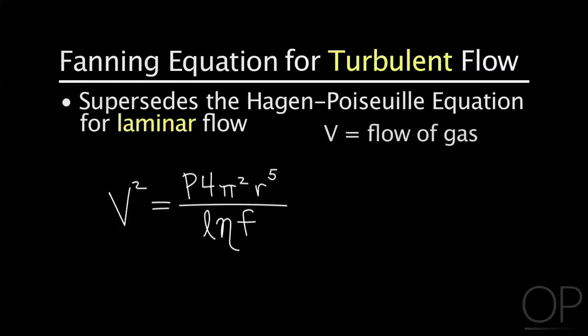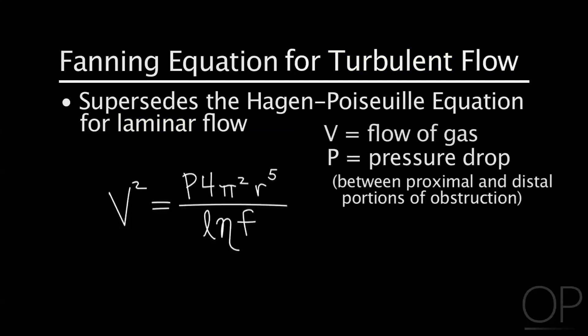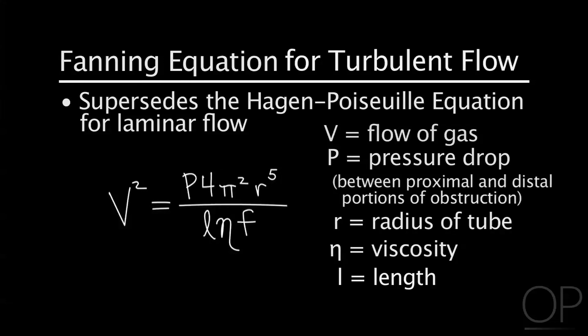This is where velocity in both equations is equal to the flow of the gas, P is equal to the pressure drop between proximal and distal portions of the obstruction, r is the radius of the tube, η is viscosity, and l is the length.